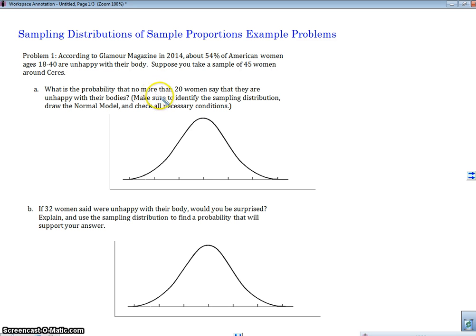What is the probability that no more than 20 women say that they are unhappy with their bodies? So notice here that we've taken a sample, and this normal model is not the population. This is a sampling distribution. We're sampling 45 women. So when we're doing that, we need to build our sampling distribution.